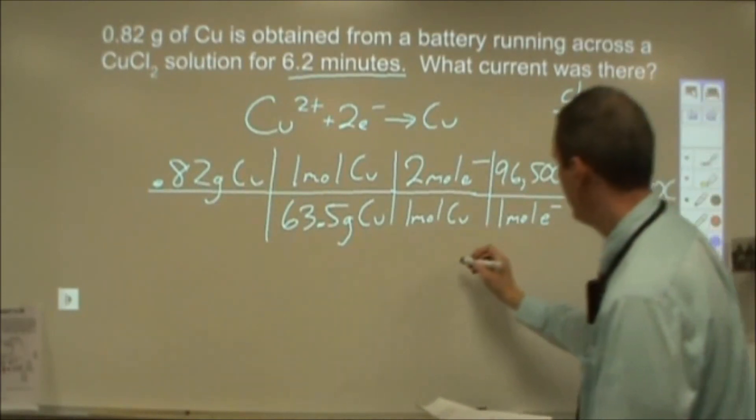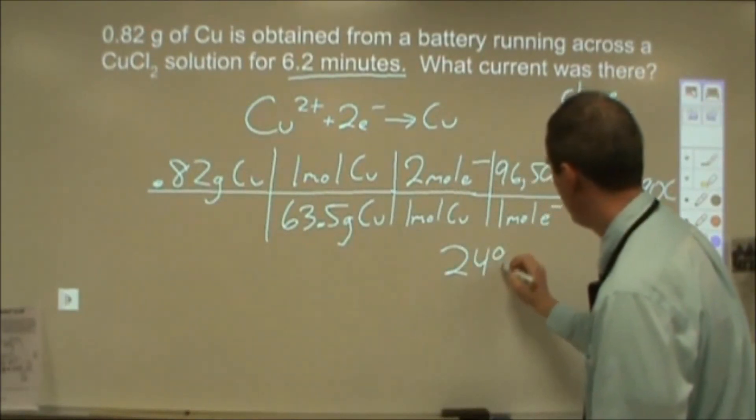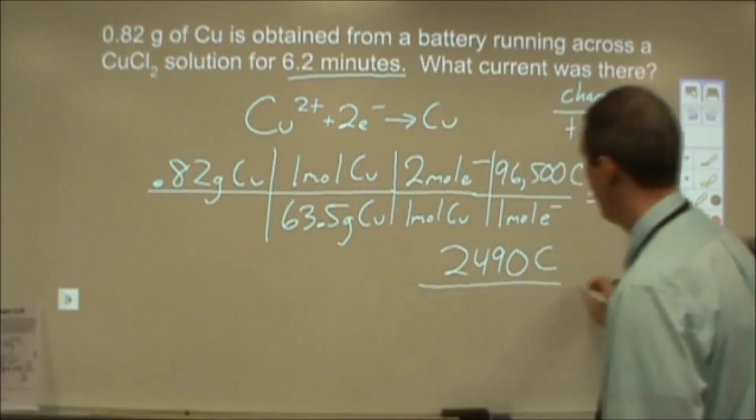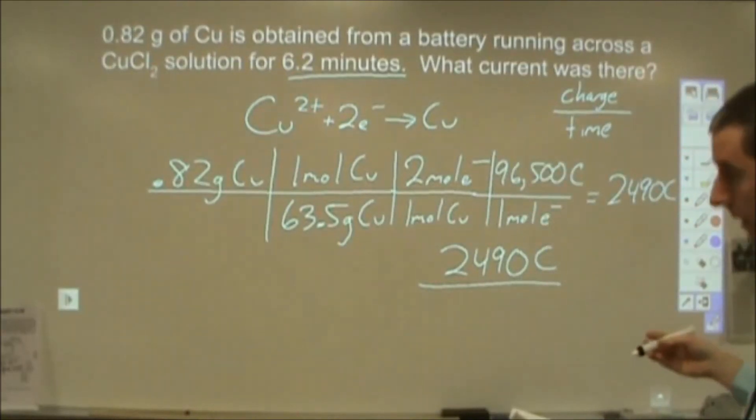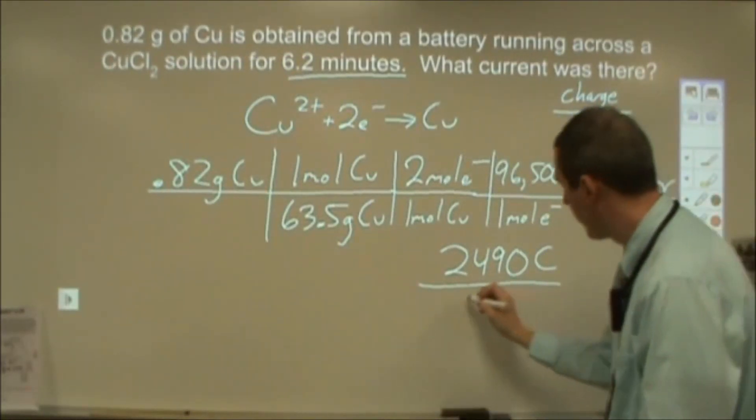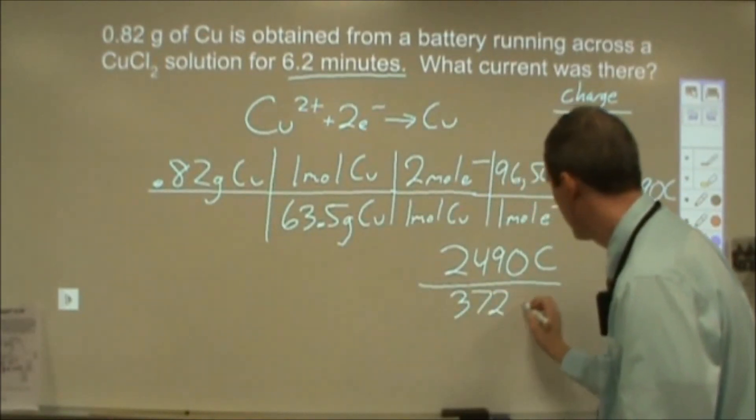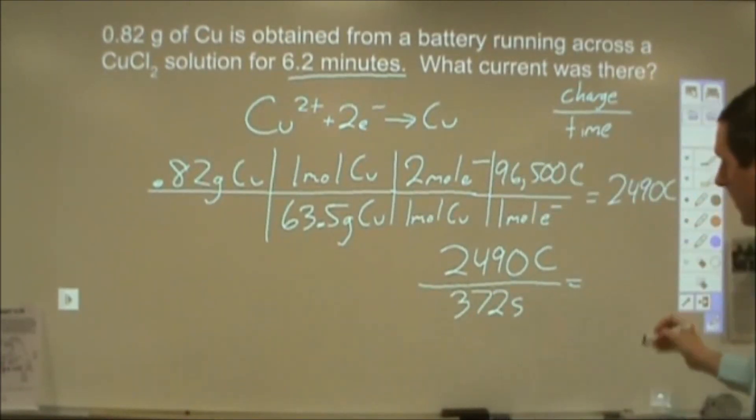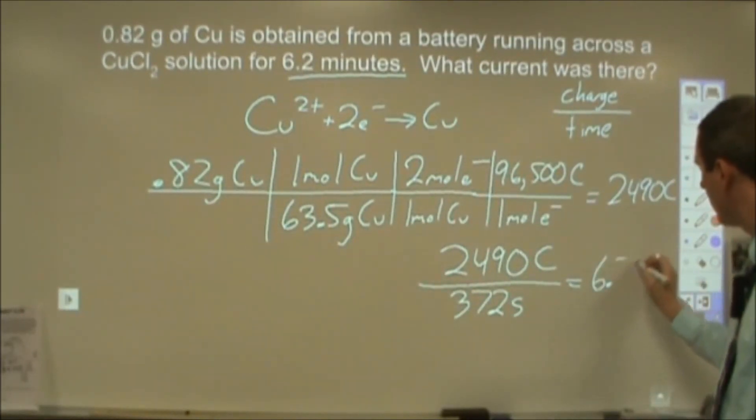So what we can then do is we can take 2,490 coulombs and divide that by how many seconds that is, which is that times 60, which comes out to be 372 seconds. So our coulombs divided by our seconds will give us our amperage. And this comes out to be 6.7 amps.